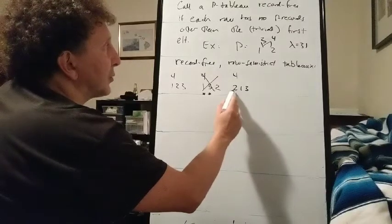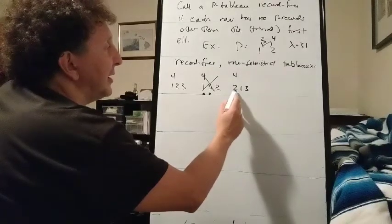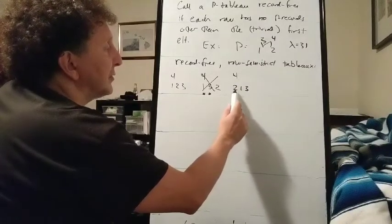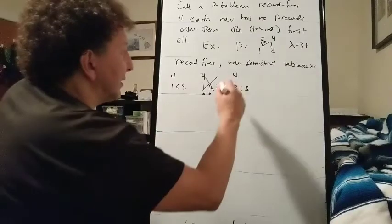This is row semi-strict. We're never going down in the poset. And 3 is not greater than 2. So 2 is the only record, the only p-record, so that one works.